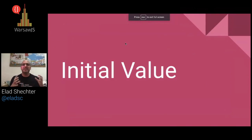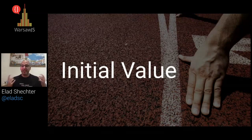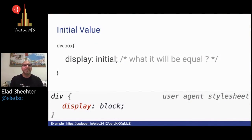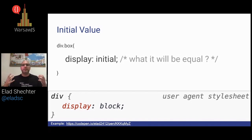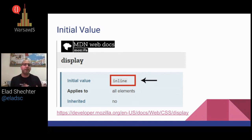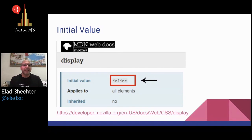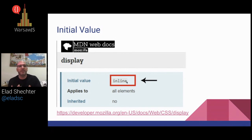The second value is getting a little bit more complicated: the initial value. All of us know that if we're using a div element, it always acts like display block at the beginning of any style sheet. This is the default user agent style sheet. But when you use display with the keyword of initial, you don't get the block value — instead, you're getting the inline value. Every property in CSS has only one initial value. It doesn't matter if you use it on a div element or a span element — it always acts the same way. If you want to know the initial value of every property, you search for it in the MDN of Mozilla, and under the initial value, you can see what value you will get.